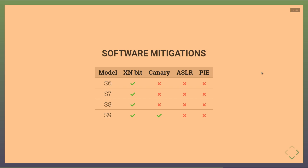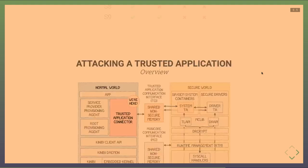Regarding software mitigations in TrustZone — or mostly the lack thereof — there is at least the execute-never (XN) bit. Otherwise, there is no ASLR, no PIE executables. Stack canaries are possible but rarely seen on the S6, S7, and S8, becoming more common on the S9. This means that if you find a vulnerability, it is generally straightforward to exploit.